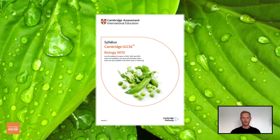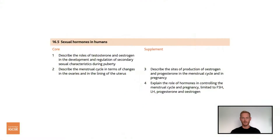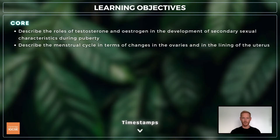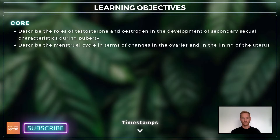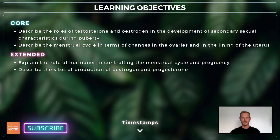As always, we'll be following the Cambridge syllabus exactly and we'll cover absolutely everything you need to know for your final exam. For topic 16.5, you need to describe the roles of testosterone and oestrogen during puberty, describe the menstrual cycle in terms of changes in the ovaries and in the lining of the uterus, and for extended, explain the role of hormones in controlling the menstrual cycle and pregnancy.